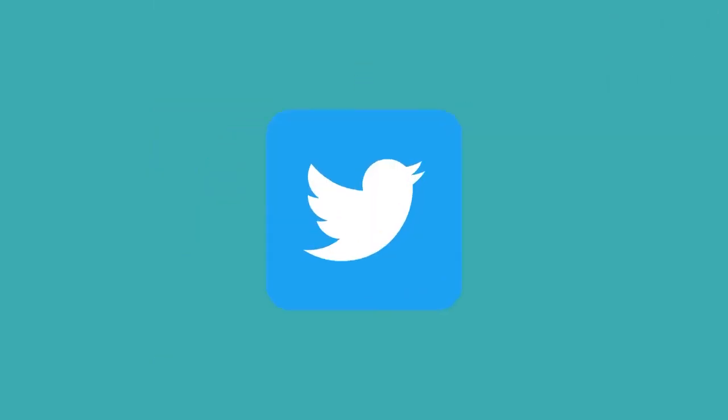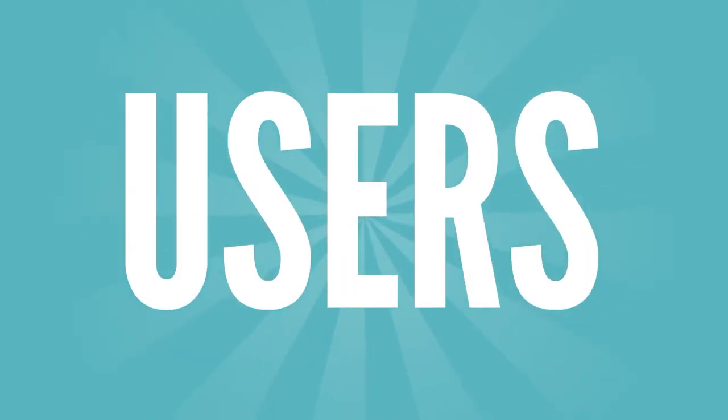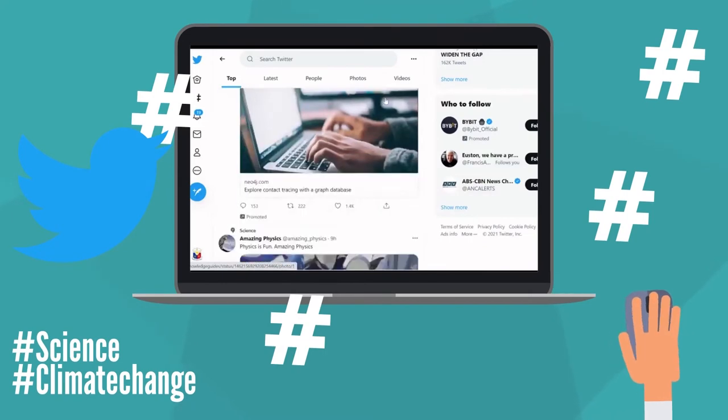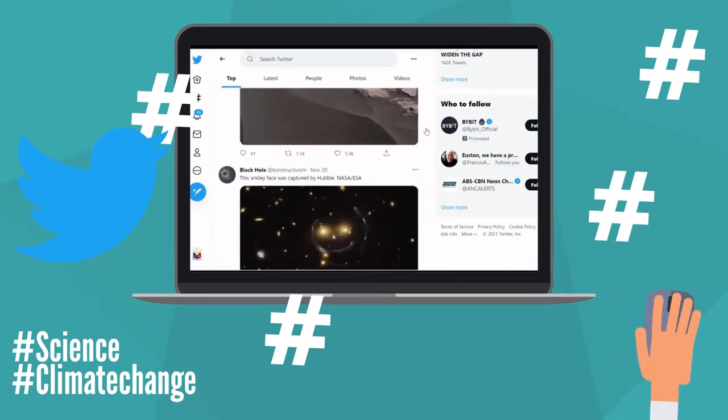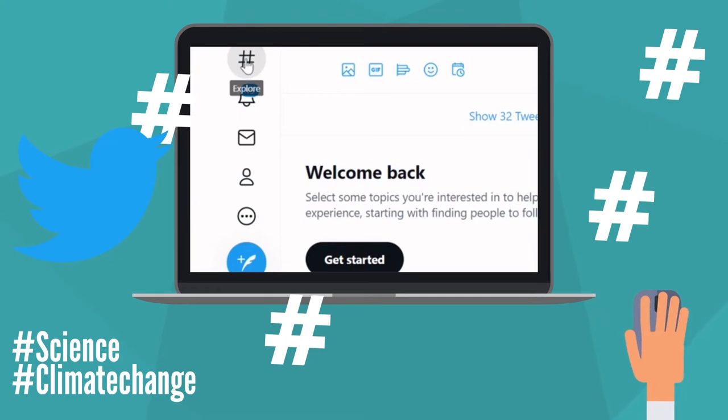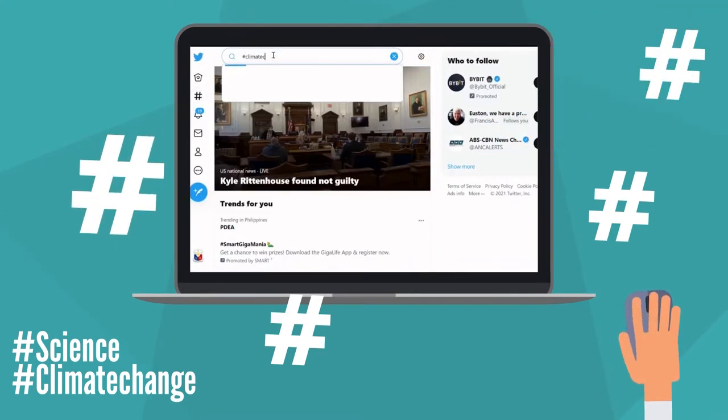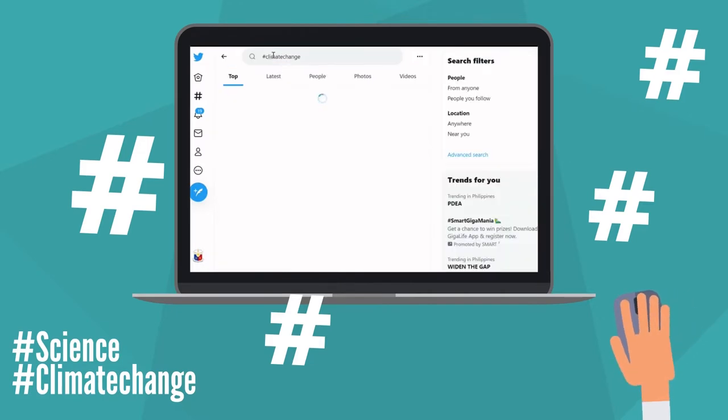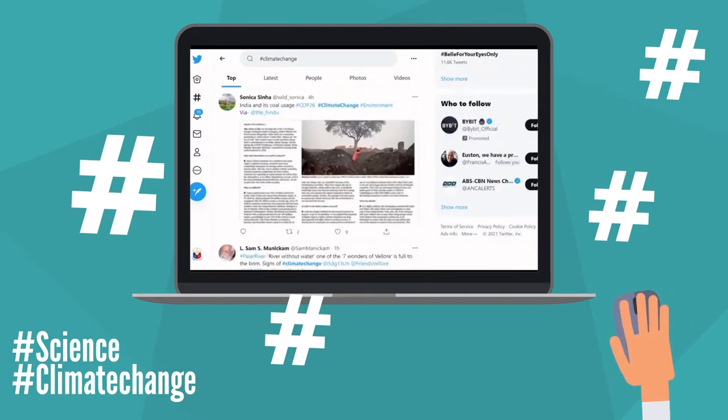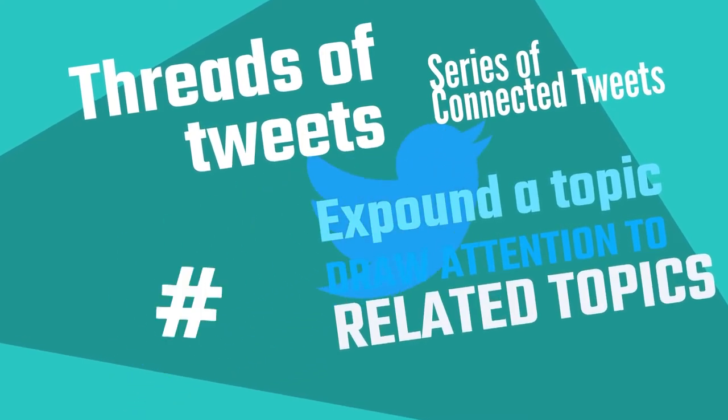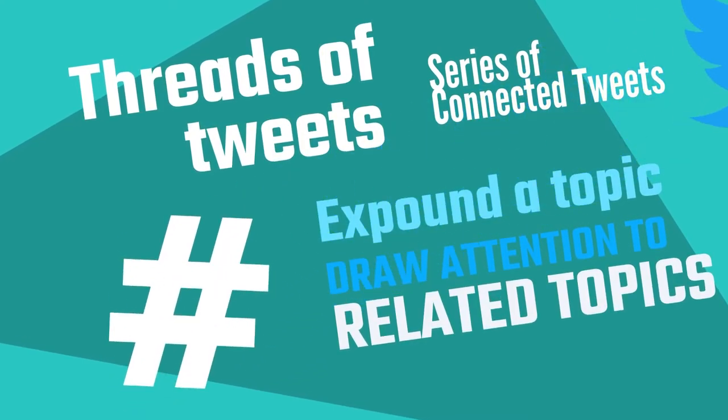Number 5: Twitter. The microblogging site Twitter allows its 463 million users to share 280-character tweets. It has become effective in spreading bite-sized information that can link to the original source material. Its hashtag feature also allows users to find categorized topics. Scientists and communicators could also create threads of tweets or a series of connected tweets, which can be useful when expounding a topic and drawing attention to related topics.